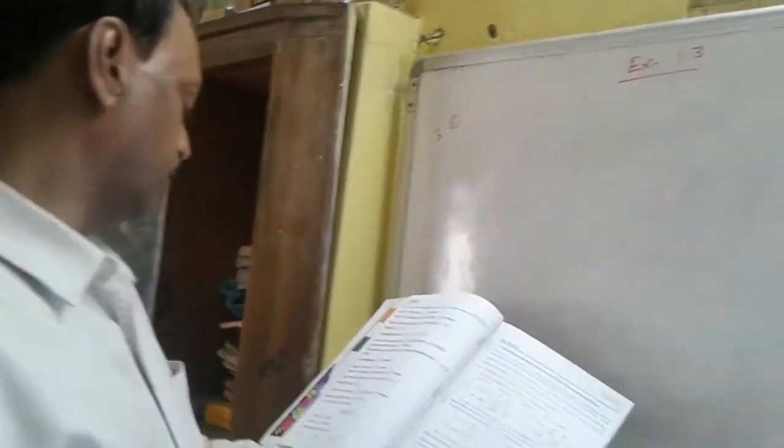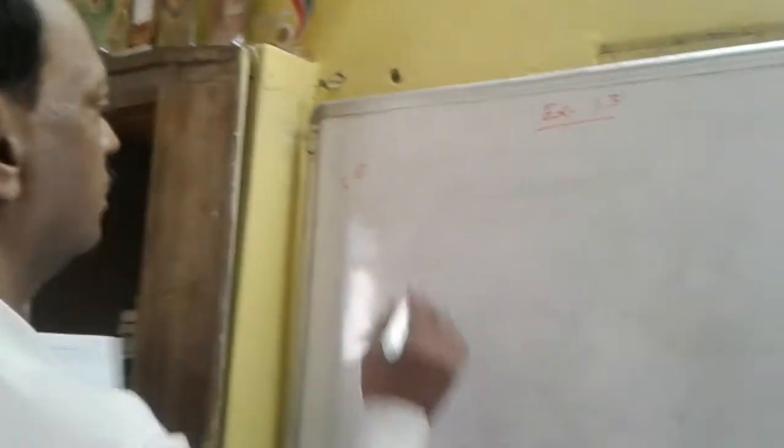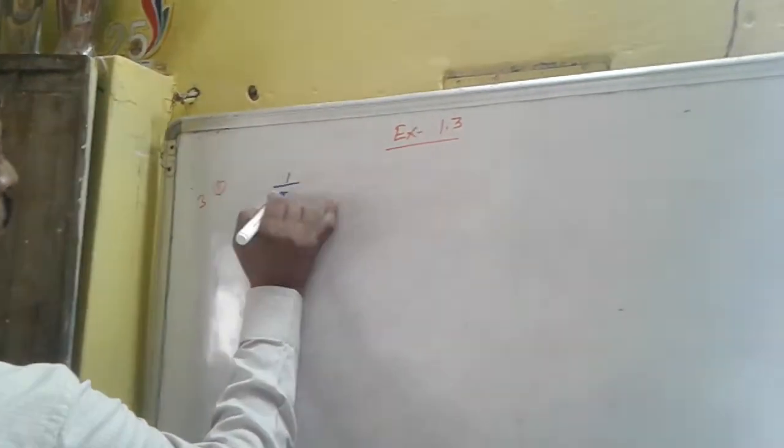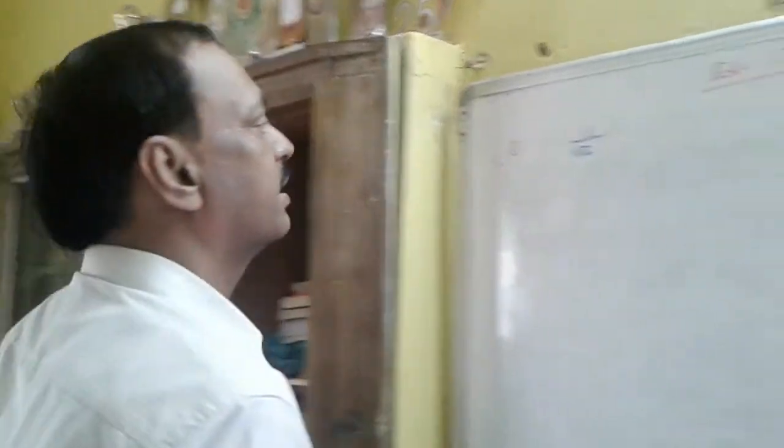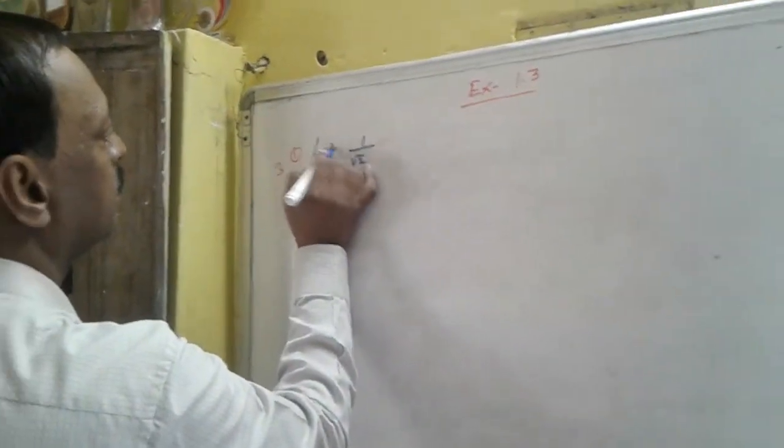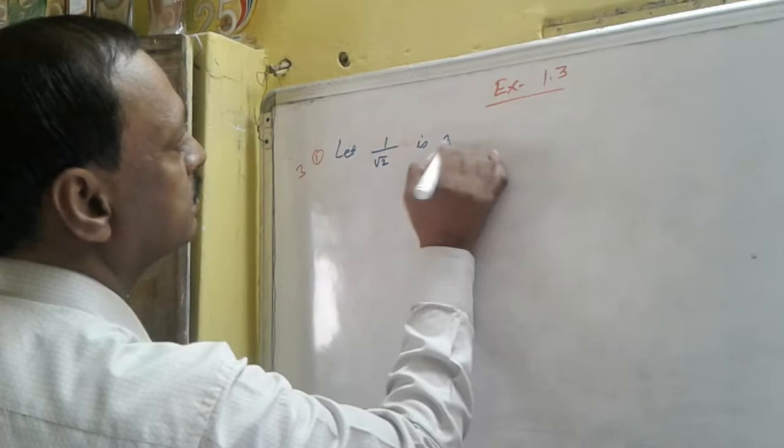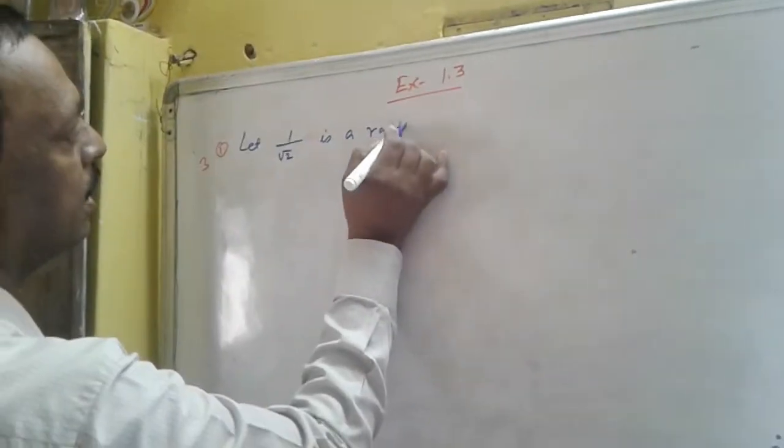Number 3. First question or question number 3: Prove that the following are irrational. First one is 1 by root 2. Method is same. We will write: Let 1 by root 2 is a rational number.